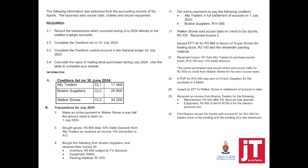Required: Record the transactions which occurred during July 2024 directly in the creditors ledger account. Question number 2: Complete the creditors list on 31 July 2024. Third question: Complete the creditors control account in the general ledger for July 2024. And question number 4: Calculate the value of the trading stock purchased during July. Use the table to complete your answer.